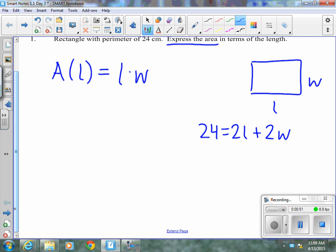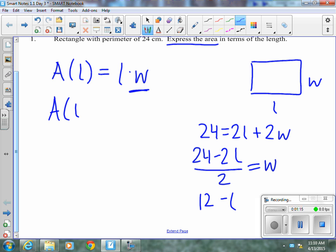We're trying to replace the W in our area function, so we need to solve this perimeter equation for W so we can replace it. So we get 24 minus 2L divided by 2 equals W. Or 12L minus L squared.